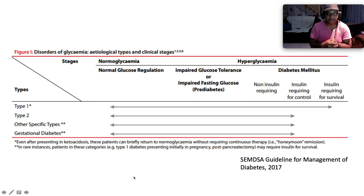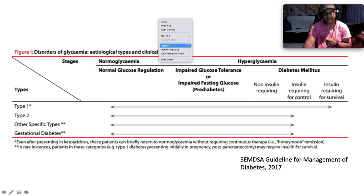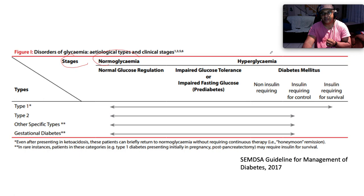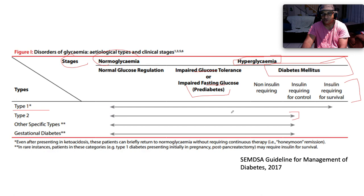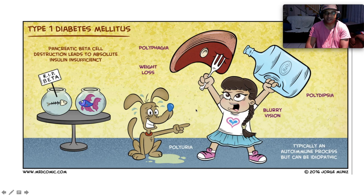Looking at disorders of glycemia by etiological type and clinical stage: we classify type 1, type 2, other types, and gestational diabetes across stages from normal glycemia, to pre-diabetes — characterized by impaired glucose tolerance or impaired fasting glucose — through to overt diabetes, which may be non-insulin requiring, insulin requiring for control, or insulin requiring for survival. Type 1 diabetes inevitably progresses to requiring insulin for survival, while type 2 may progress to insulin requiring for control but not necessarily for survival.